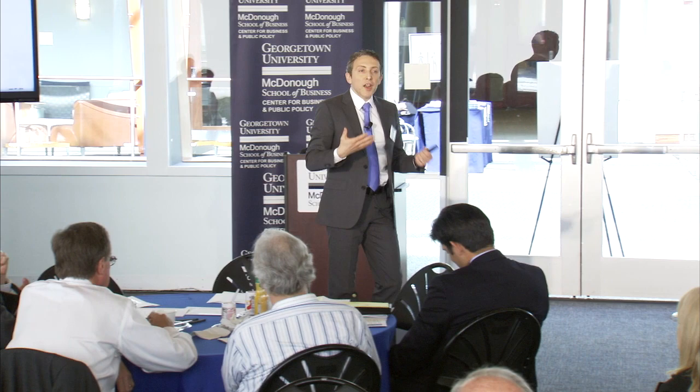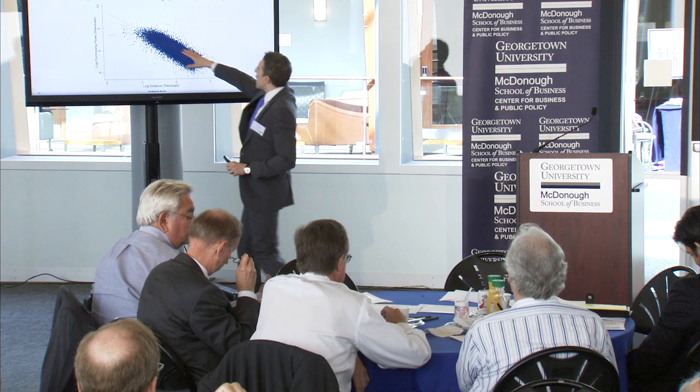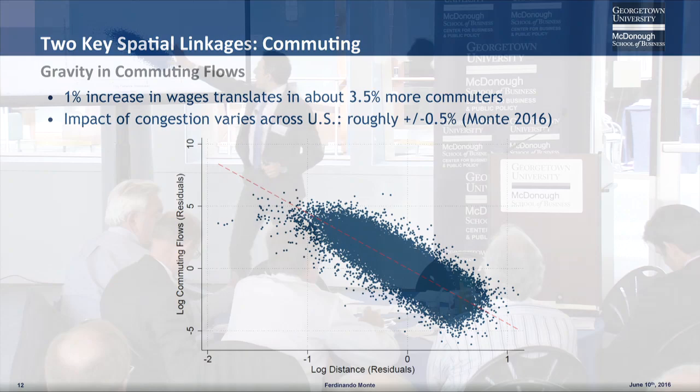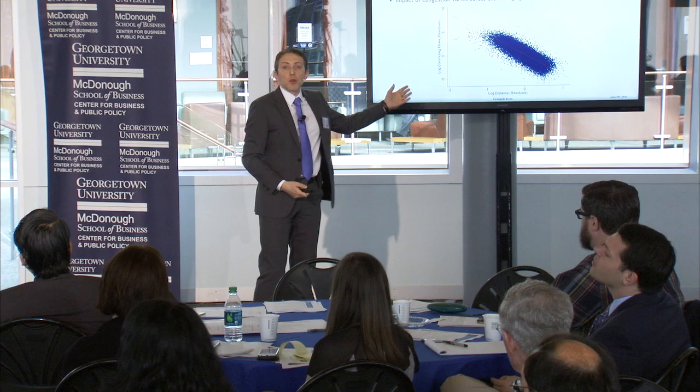That 4.3% elasticity of commuting with respect to distance is way higher than the 1.3% for goods, which is very sensible — it's much more expensive to ship people than goods, and that's why commuting flows decline so fast with distance. The number I want you to keep in mind is that a 1% increase in wages typically translates into 3.5% more commuting — an estimate from our paper. This number changes a little if you allow for congestion, but the key point is that this is a very high number. Small changes in wages imply large changes in commuting flows — the commuting margin is very sensitive.